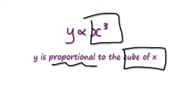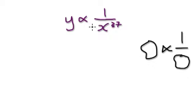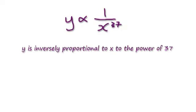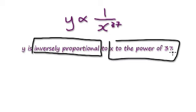This next one here — you can see it is of the one-over-something type, so you know it's going to be inversely proportional. So this would be: Y is inversely proportional to X to the power of 37. Or you can say Y is inversely proportional to the 37th power of X. Anything along that line.